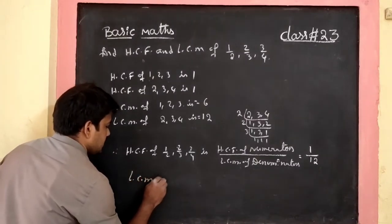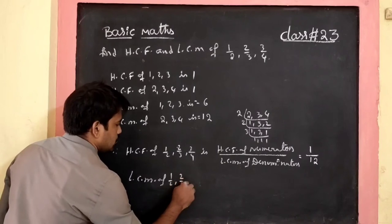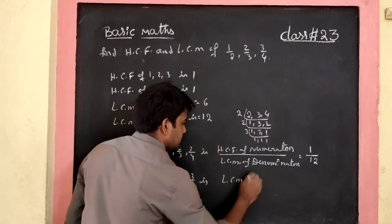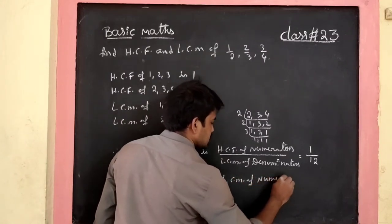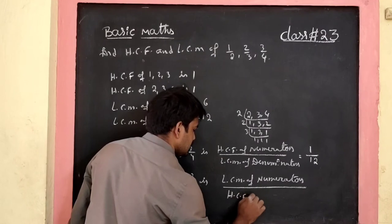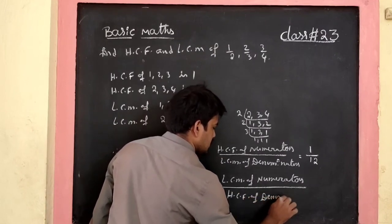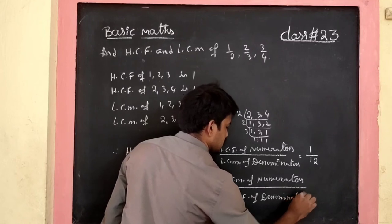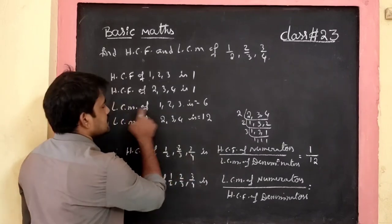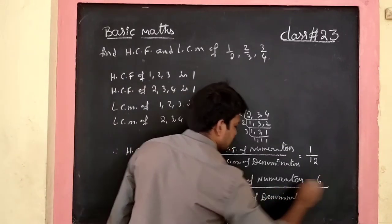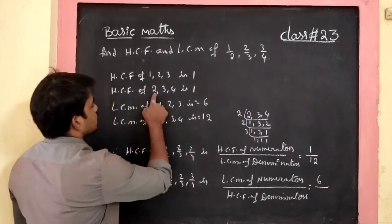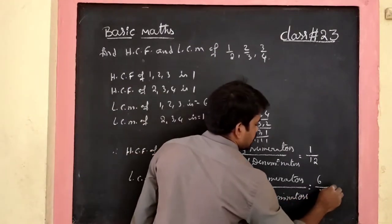Next, LCM of fractions 1/2, 2/3, 3/4 equals LCM of numerators by HCF of denominators. LCM of numerators 1, 2, 3 is 6. HCF of denominators 2, 3, 4 is 1. So the final answer is 6.